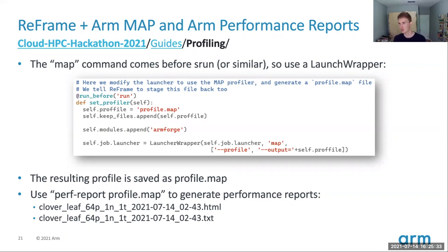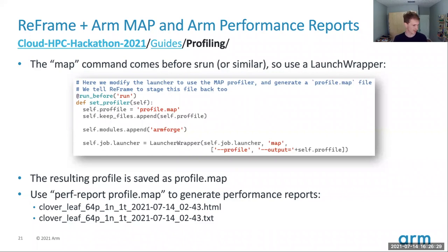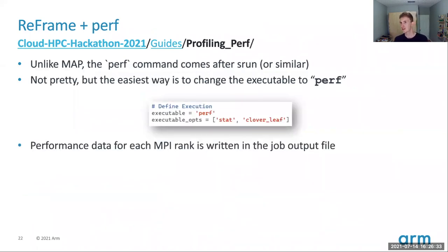If you want to use MAP and Performance Reports, there's a great guide in the git repo that walks you through how MAP gets invoked from ReFrame. You can run perf-report after the fact or wire it into your ReFrame script to get a nice perf report afterwards. An interesting thing: you have to put the MAP command in front of your srun or mpirun command in ReFrame. The way to do that is using the launcher wrapper class — it's really not very scary, it's pretty easy to add profiling to your ReFrame recipes.